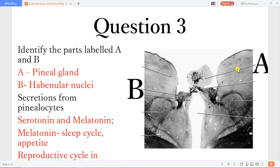So here you have the pineal gland and the habenular nuclei. So A is the pineal gland and B is the habenular nuclei. So you have the lateral habenular nucleus and the medial habenular nucleus. And so these connect directly with the pineal gland. So these structures here form what we call the epithalamus.